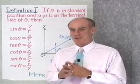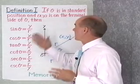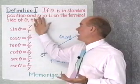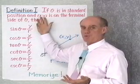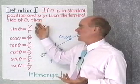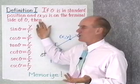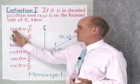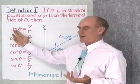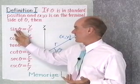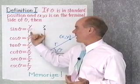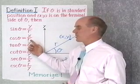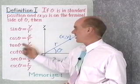Here's our first definition for the trigonometric functions. If θ is an angle in standard position, and the point is any point on the terminal side of θ other than the origin, then the sine of θ — abbreviated S-I-N-E — is the y-coordinate divided by r. Cosine of θ is defined to be the x-coordinate divided by r.